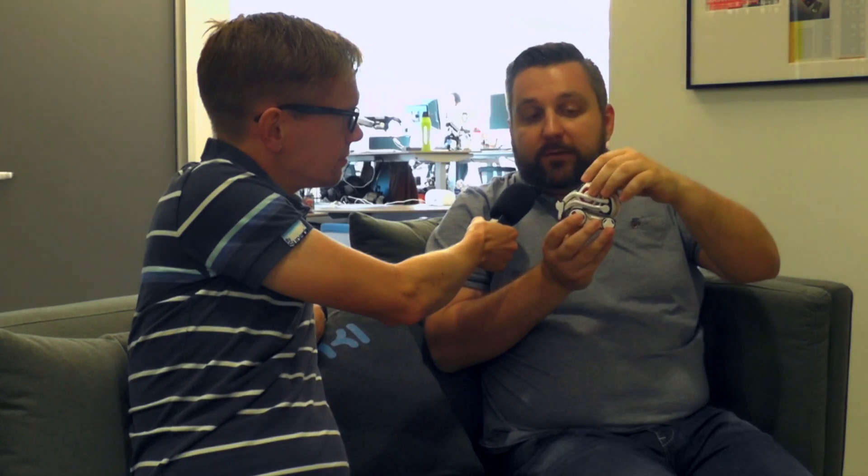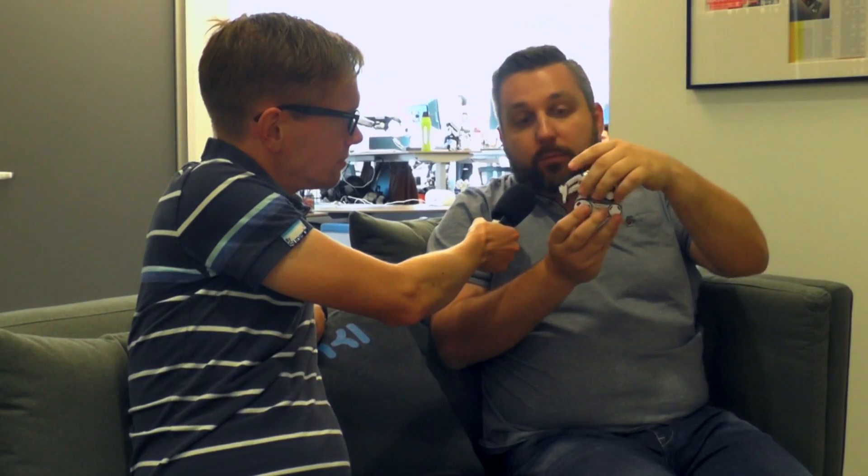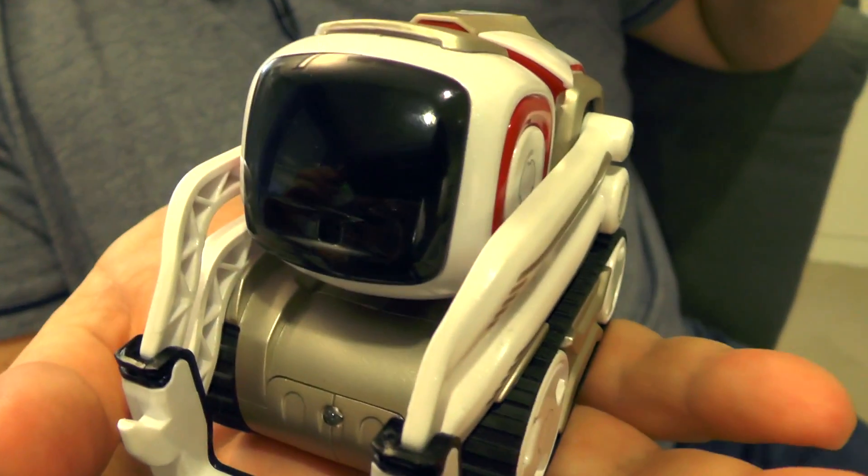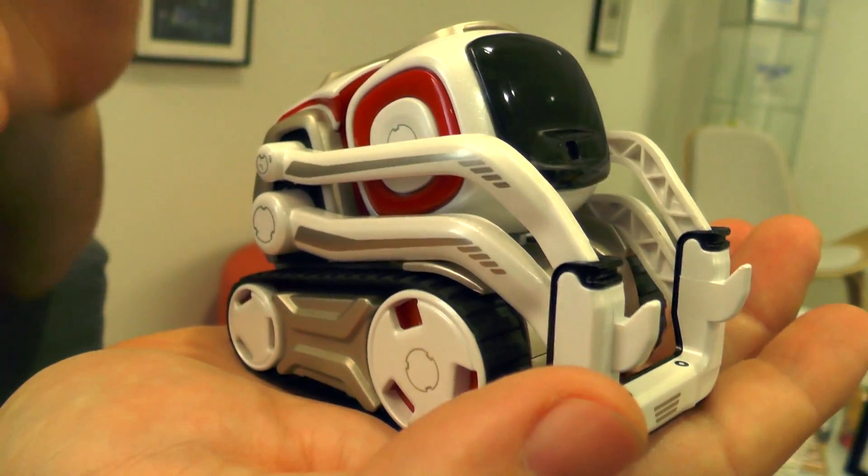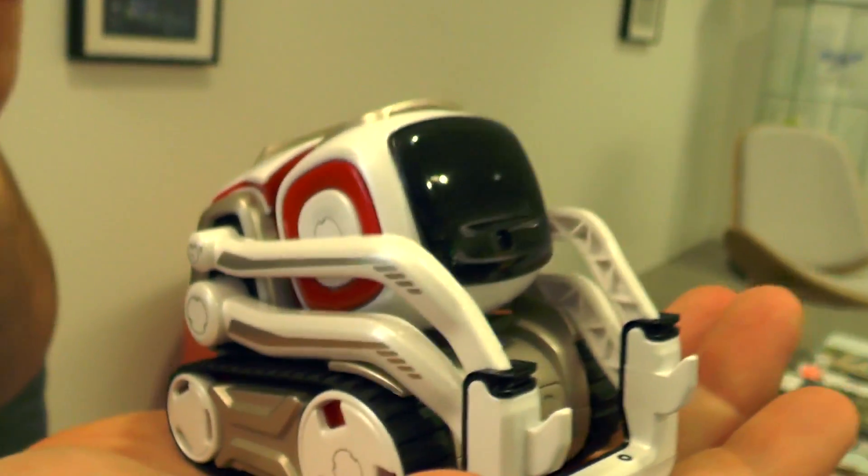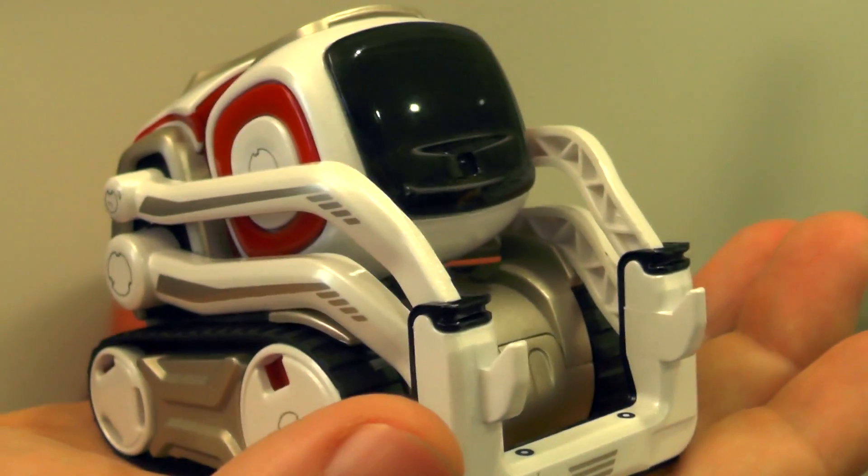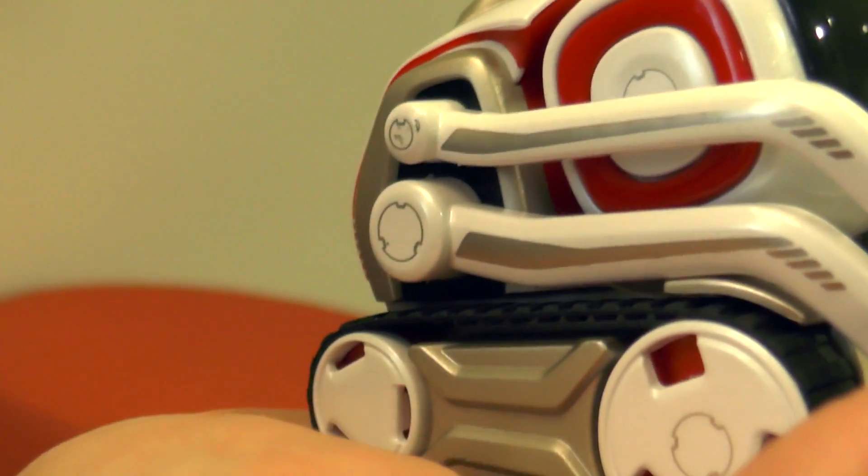The robot has degrees of freedom, such as moving his head up and down, moving his arms up and down. The arms are there for him to manipulate his environment. He comes with what we call power cubes—they're his play toys and they're used also in gameplay.